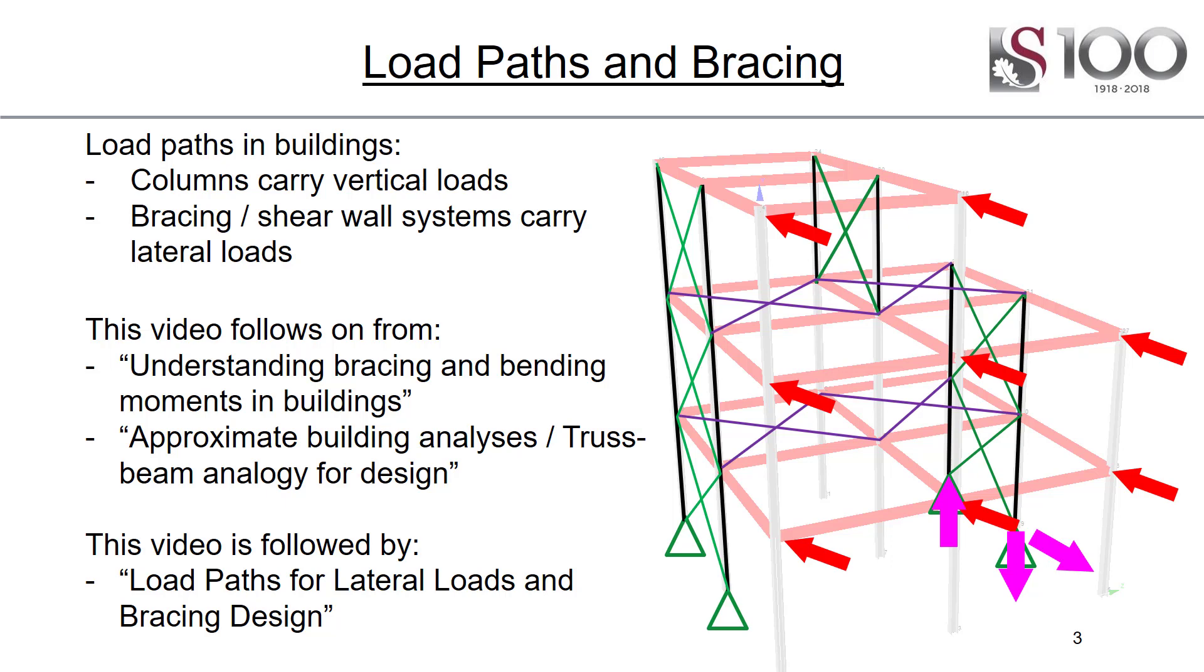You ignore your bracing systems when you do a vertical load down. So those green braces we discuss in the next video are totally ignored. But then you use your bracing and your shear wall systems to carry lateral loads. So the red loads you'll carry in your lateral load systems, your vertical loads go down the column. So you ignore the one when you design the other, unless you have specific requirements and layouts and very stiff bracing members, which do actually carry the loads.